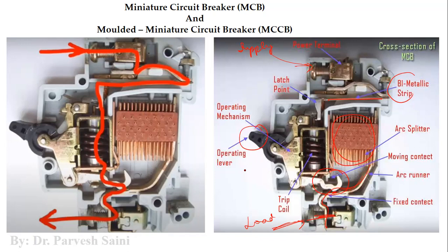The operating lever is used to disconnect the circuit manually if something wrong is happening and the MCB doesn't trip automatically. Under normal conditions, current flows from the supply through the MCB components — through the latch point, the plunger, the tripping coil — and on to the load.